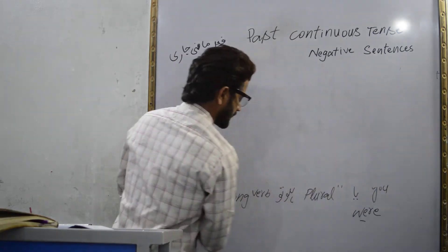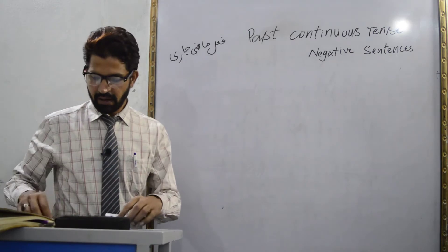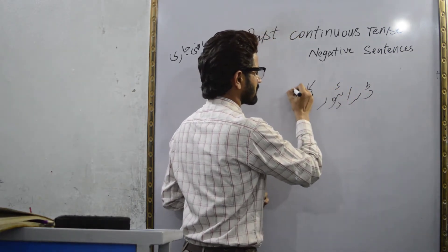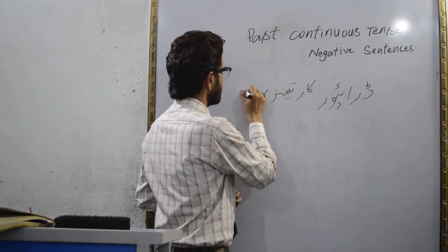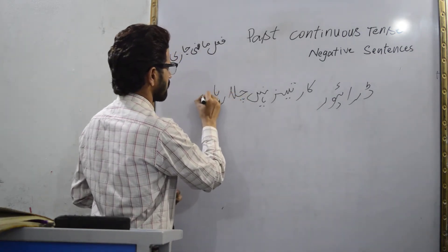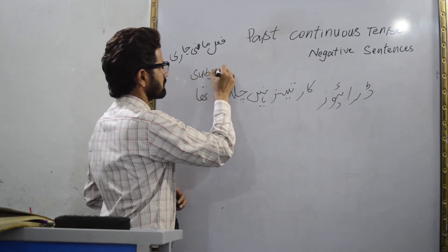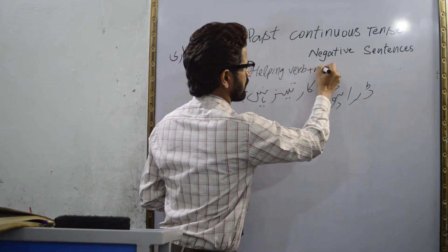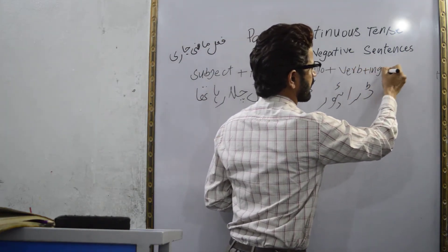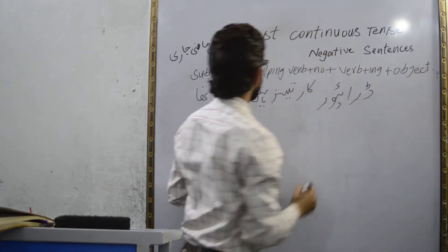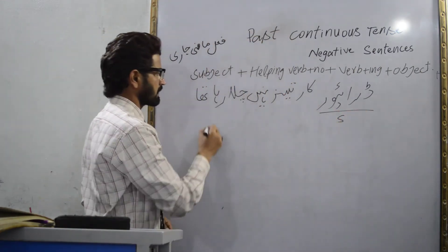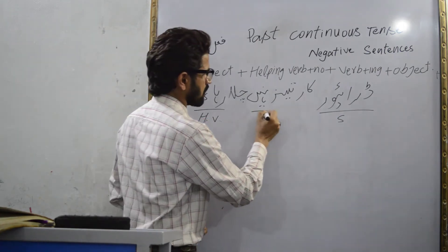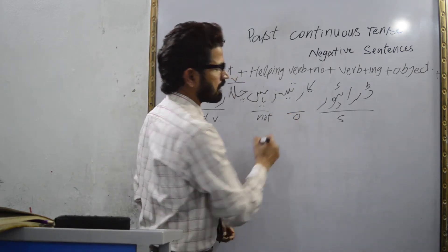Ye iska practice kar lete hain, negative sentences ki. Hamare paas hai: driver, car, tez, nahi, chala raha, tha. Iska method hai: first of all subject, then helping verb plus not, then verb with -ing added, and last pe object. Is method ke tehat driver hamare paas subject hai, 'raha tha' helping verb hai jo past continuous dikhata hai, 'not' negative sentence hai, 'chalana' verb hai, aur 'car' object hai.